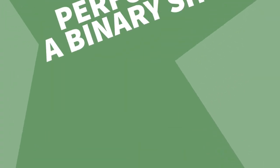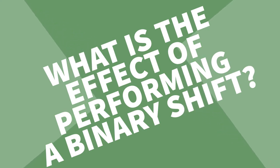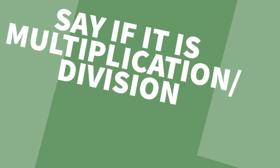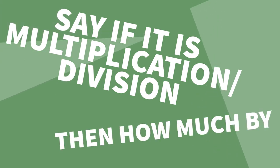You can also be asked: what is the effect of performing a binary shift on a specific number? To answer that, you simply specify whether it is multiplication or division, and then by how much.